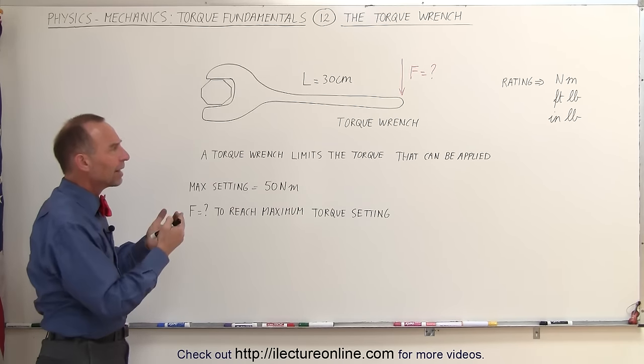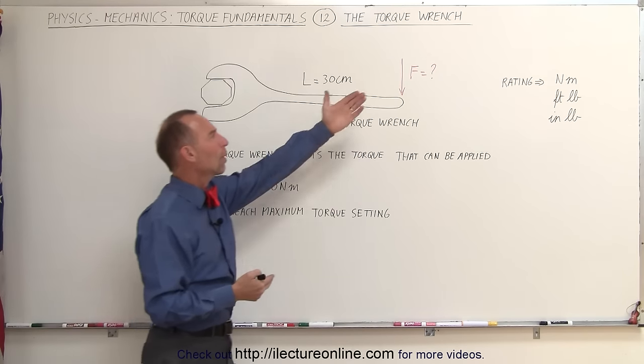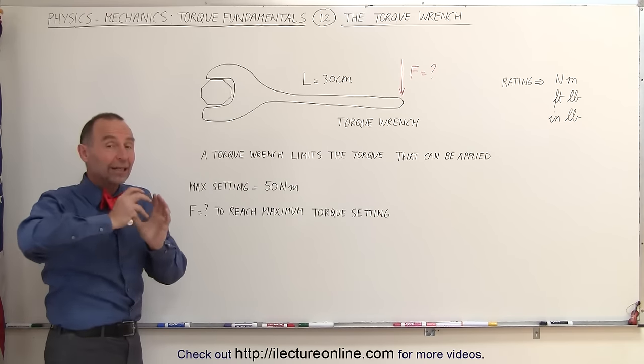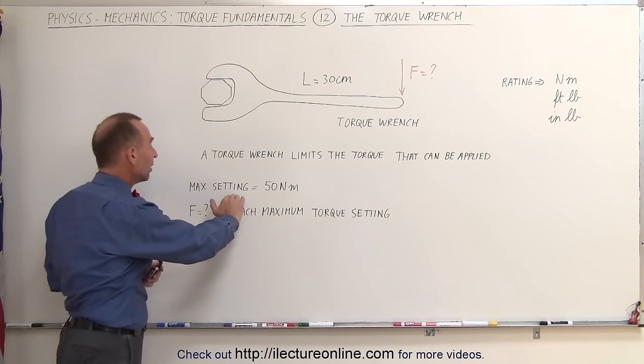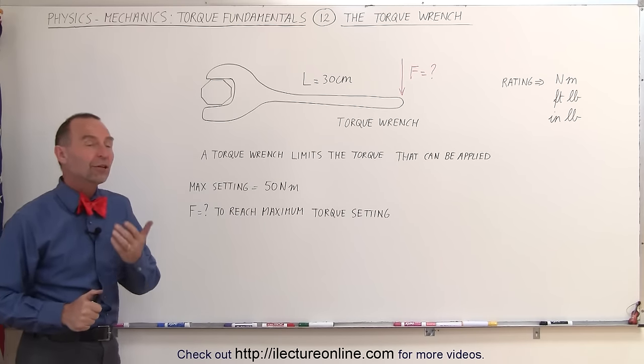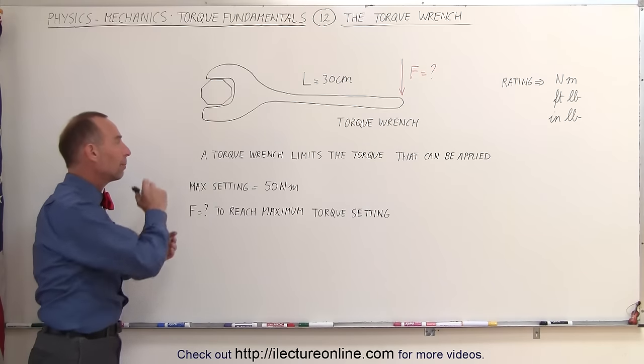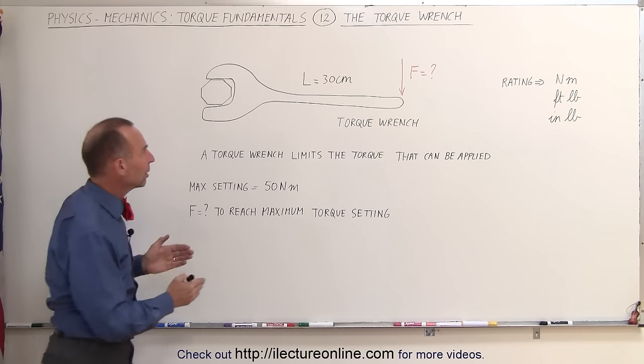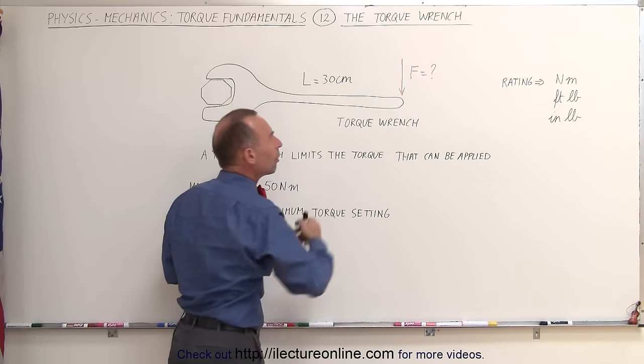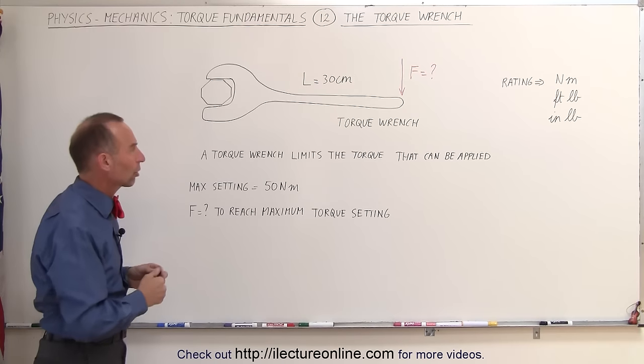How do we find out what the maximum force required is to apply a maximum torque? Let's say that we're tightening a bolt and the maximum setting should be 50 Nm. We should not apply more than 50 Nm of torque to that particular bolt. If we know that our torque wrench is 30 cm long, how much force will we need to apply to reach that maximum torque setting?